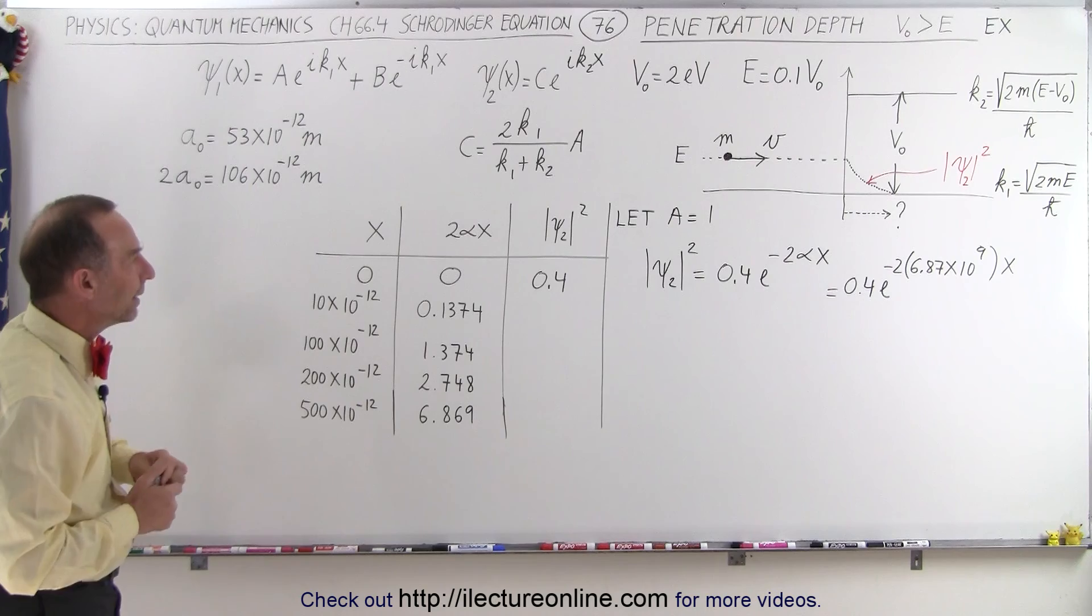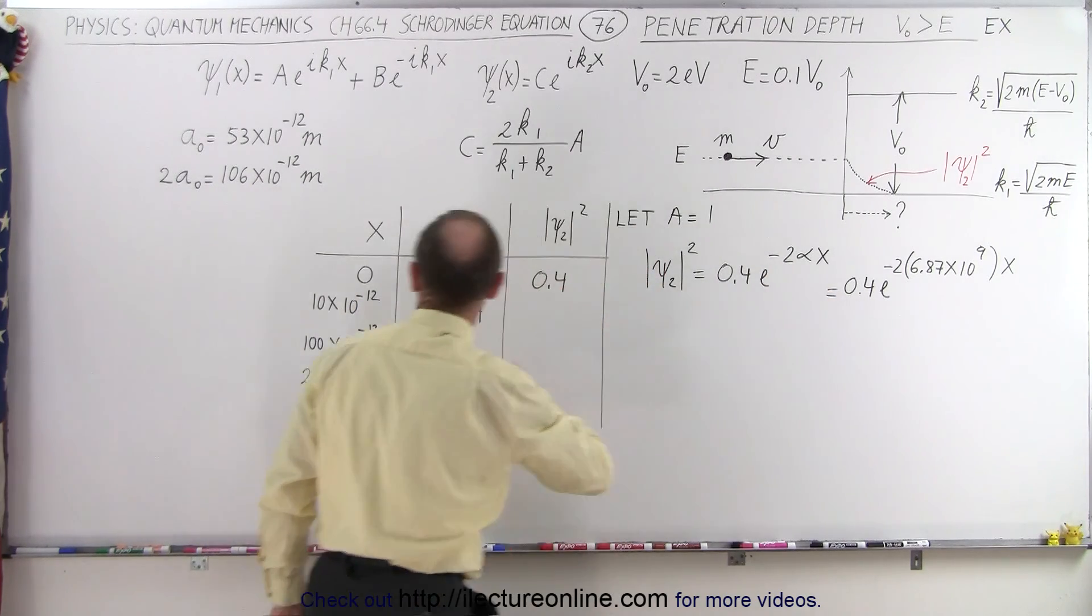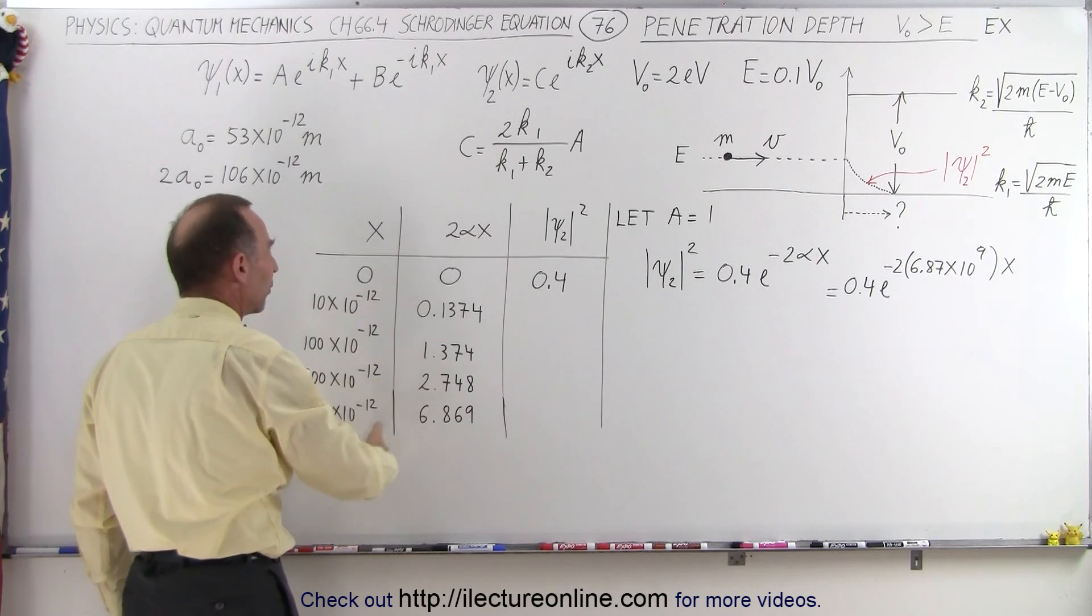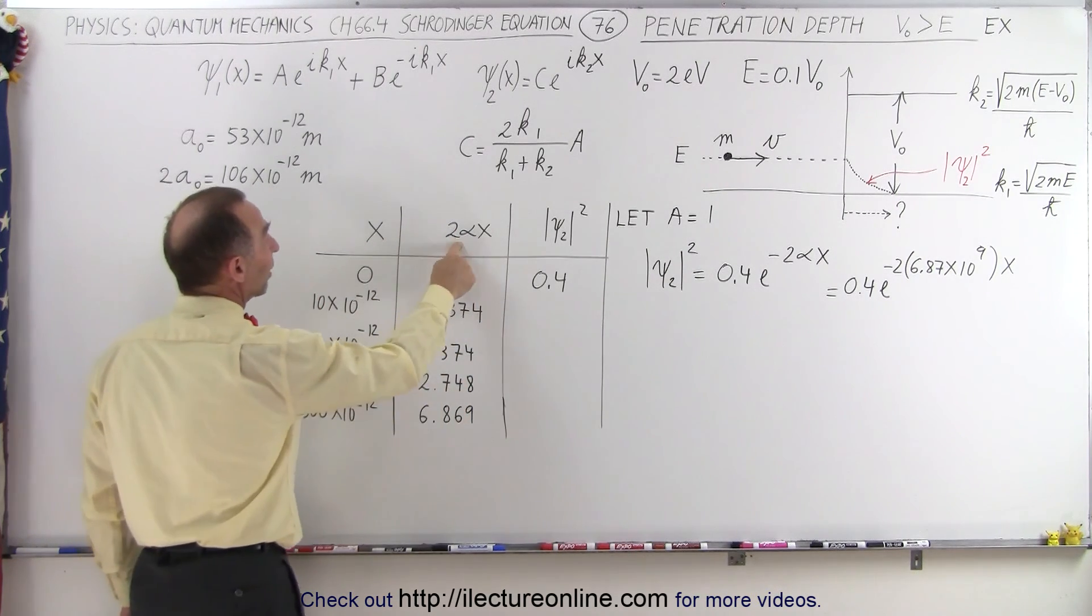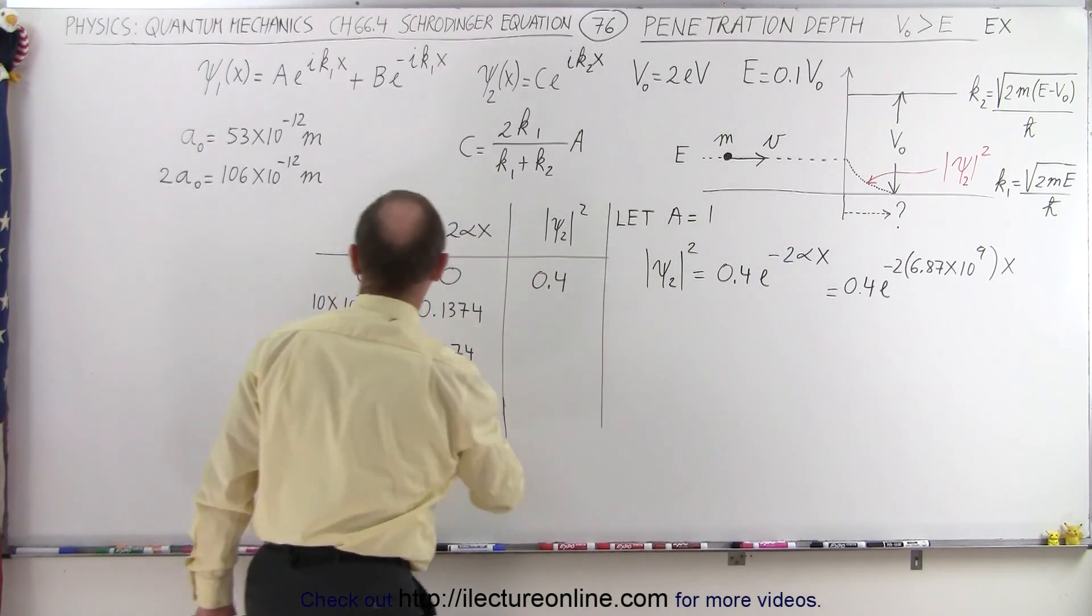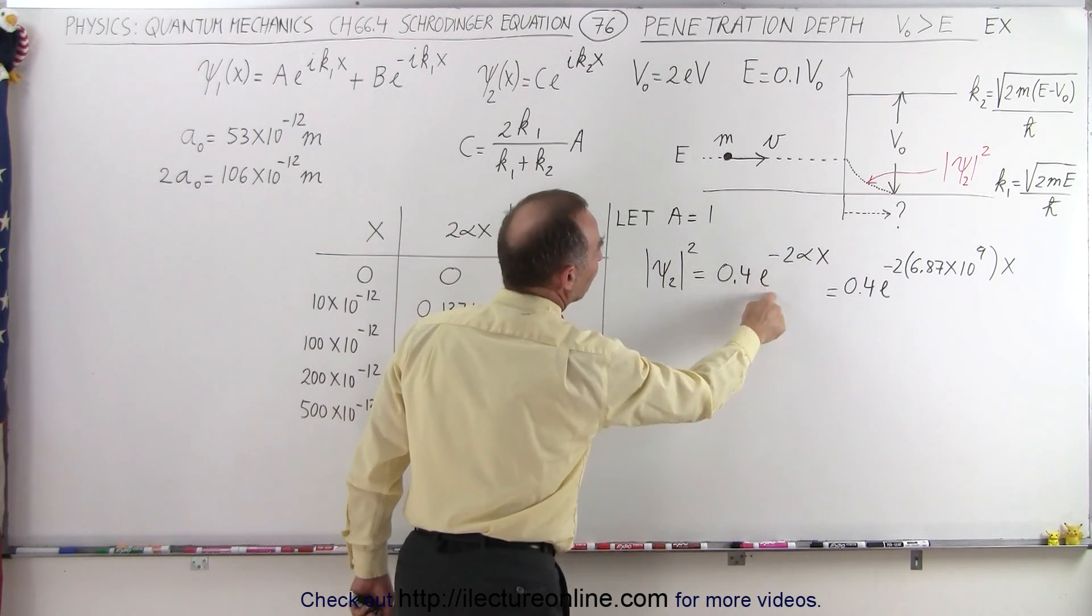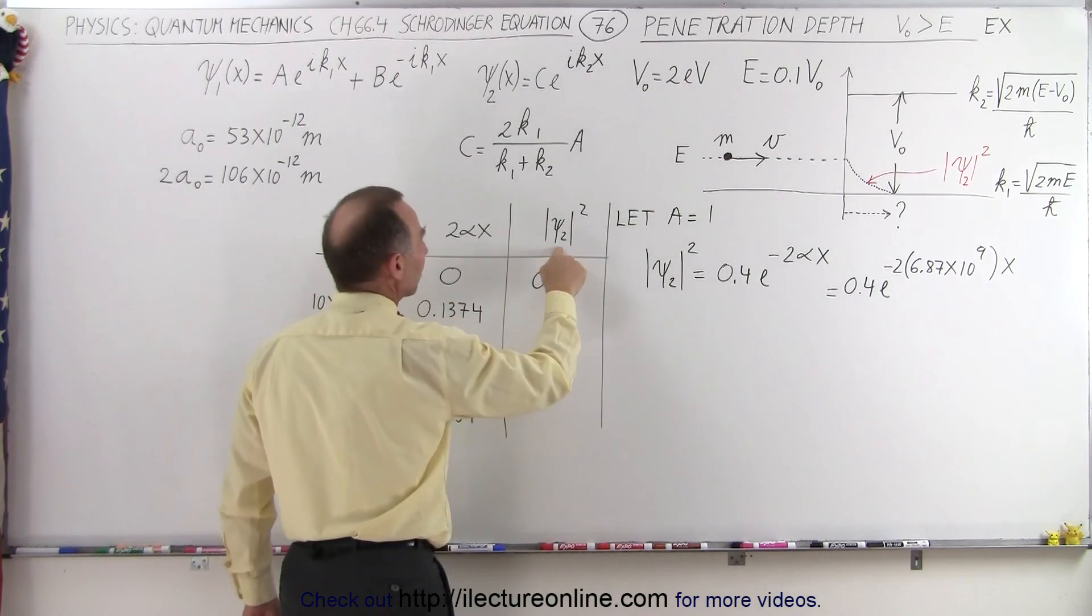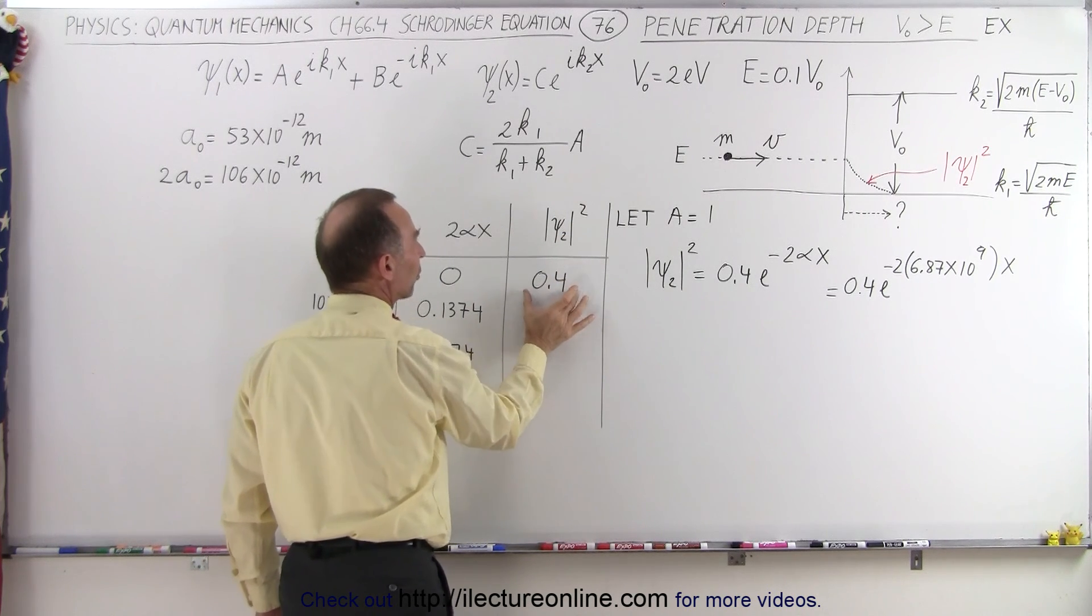Now let's realize that the quantity 2 alpha x for various values of x have already been calculated here to make it a little simpler and faster. So 2 alpha x, 2 times alpha which is this number right here times x, which we start off with 0. When x is equal to 0, e to the 0 is 1, so the wave function, the magnitude of the wave function squared, is equal to 0.4, which is equal to the constant, the magnitude of the constant squared in front here.